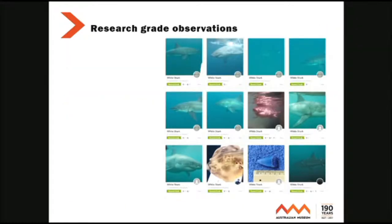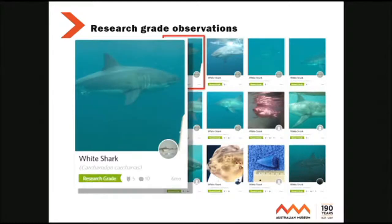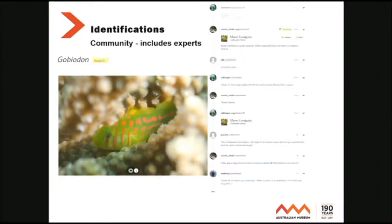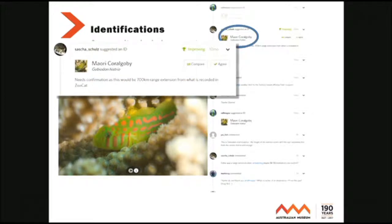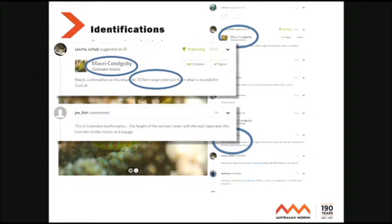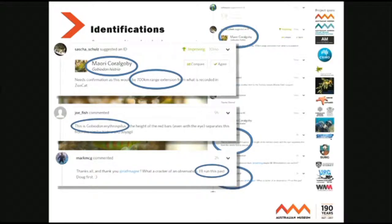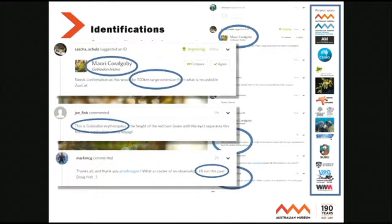Research grade observations: these are fish you'll recognise, some of them from the South Australian region — white shark. In this case it's been agreed to by a whole bunch of different people and it's marked as research grade. The community includes experts. This guy put in a Maori coral goby and said it would be a 700 kilometre range extension. Somebody else, Joe Fish — I like that — said no, no, it's this other species. I commented and said I'll run that past Doug, who is the world goby expert. He confirmed that Mr. Fish is right, and we then got the correct identification.